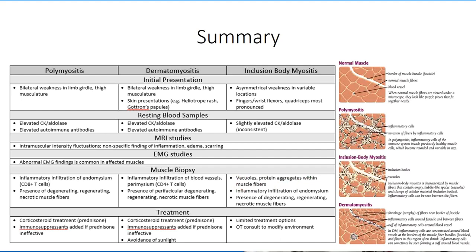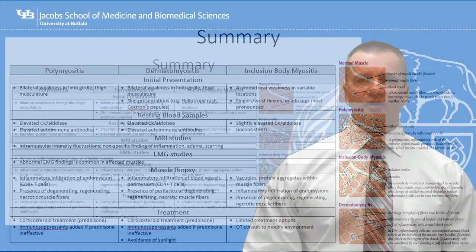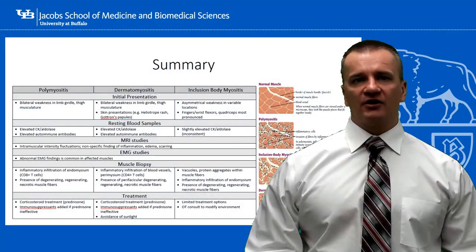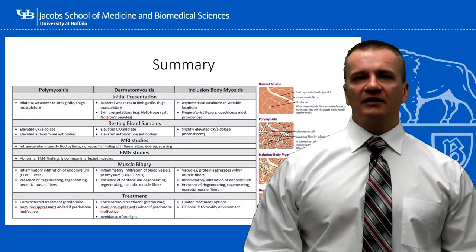Treatment for both dermatomyositis and polymyositis involves corticosteroids, followed by immunosuppressants if the patient does not respond to the corticosteroid treatment. Little can be done in the case of inclusion body myositis, and a referral for occupational therapy is likely warranted.